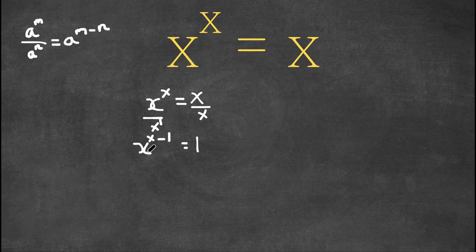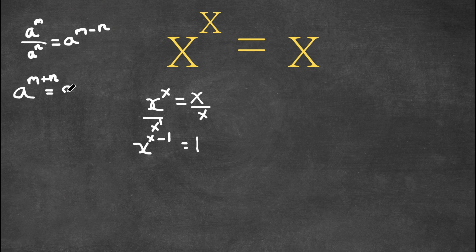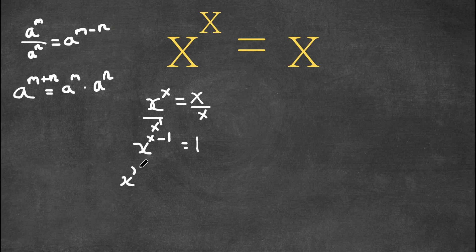Now, before I rewrite this, another important property of exponents is that a to the power of m plus n equals a to the power of m times a to the power of n. So x to the power of x minus 1 equals x to the power of x times x to the power of negative 1.